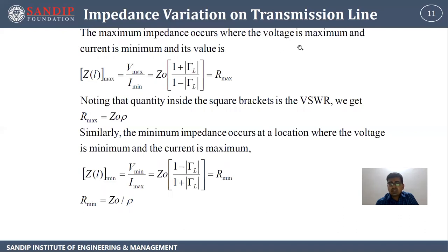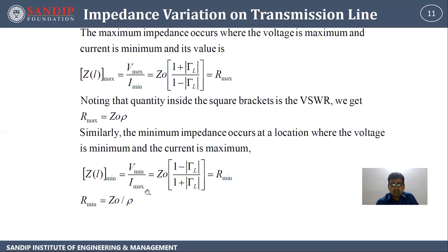Maximum impedance occurs where the voltage is maximum and current is minimum, and its value is Z_L_max equal to V_max upon I_min, that is equal to Z_naught times (1 plus reflection coefficient) upon (1 minus reflection coefficient), equal to R_max. Noting that the quantity inside the square bracket is VSWR, we get R_max equal to Z_naught times VSWR. Similarly, the minimum impedance occurs at a location where the voltage is minimum and current is maximum. Z_L_min equal to V_min upon I_max, which is equal to Z_naught times (1 minus reflection coefficient) upon (1 plus reflection coefficient), that is R_min equal to Z_naught upon VSWR.